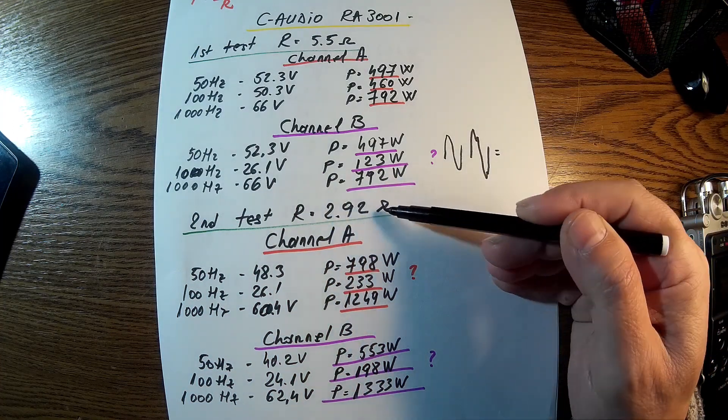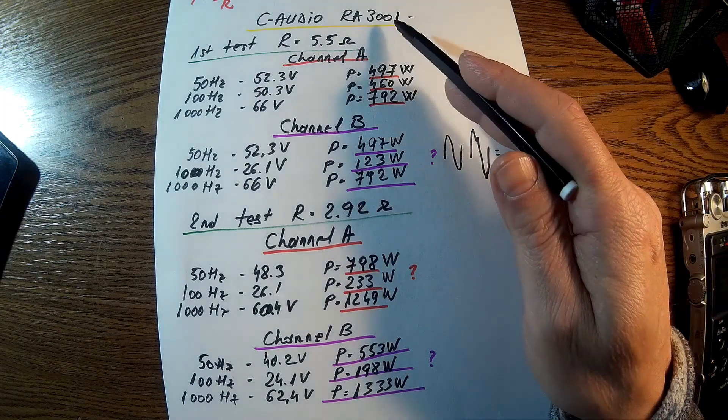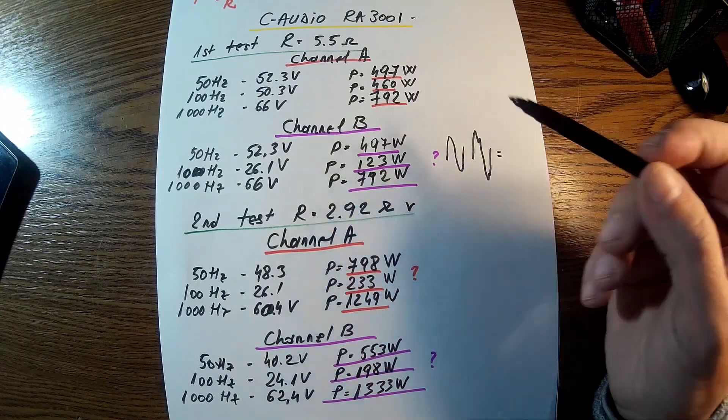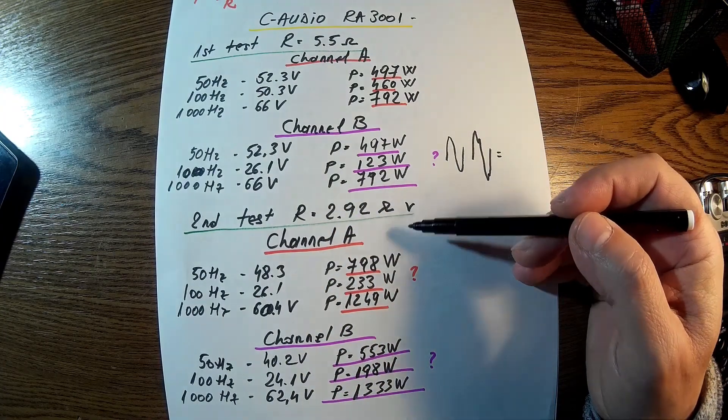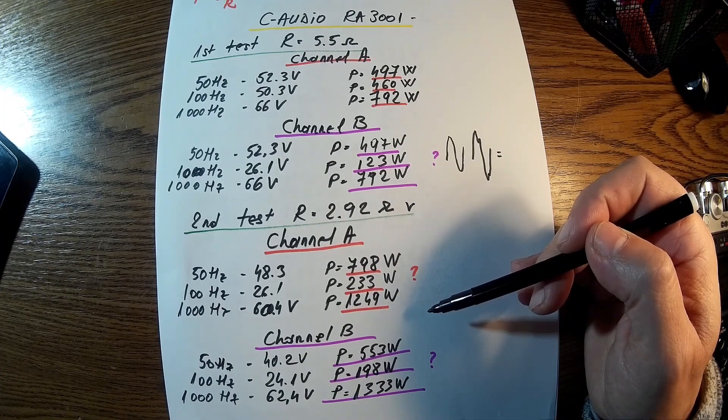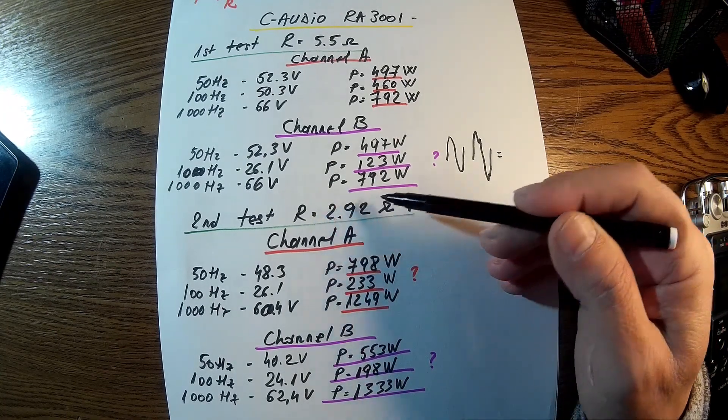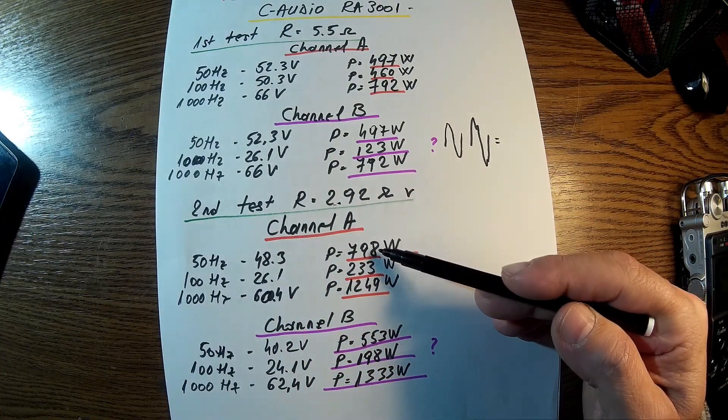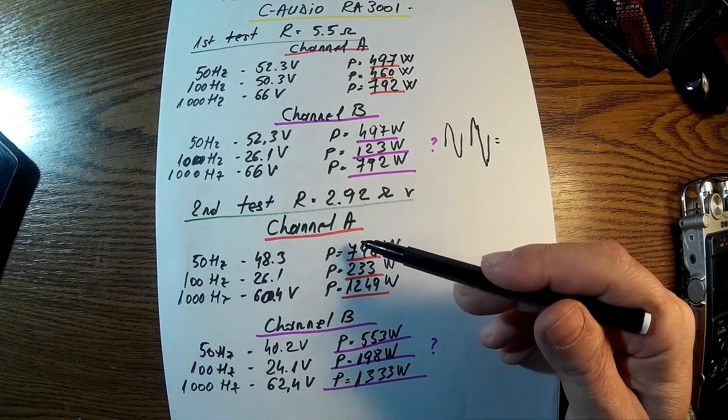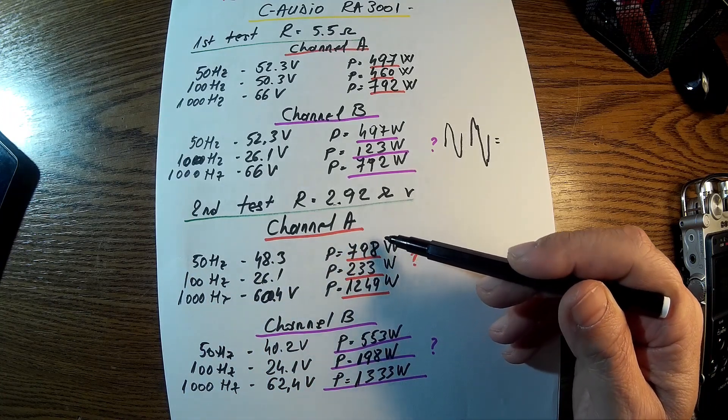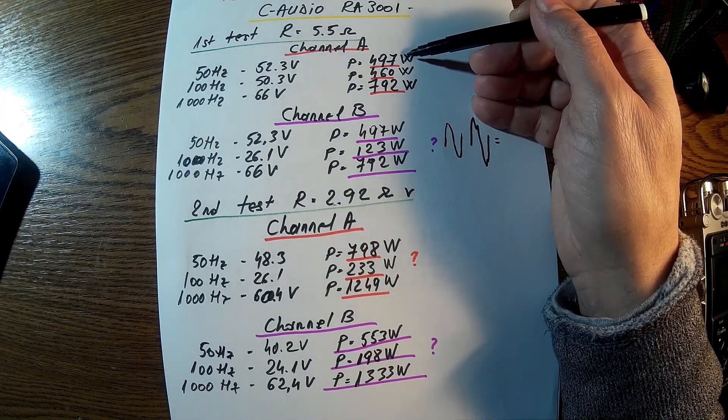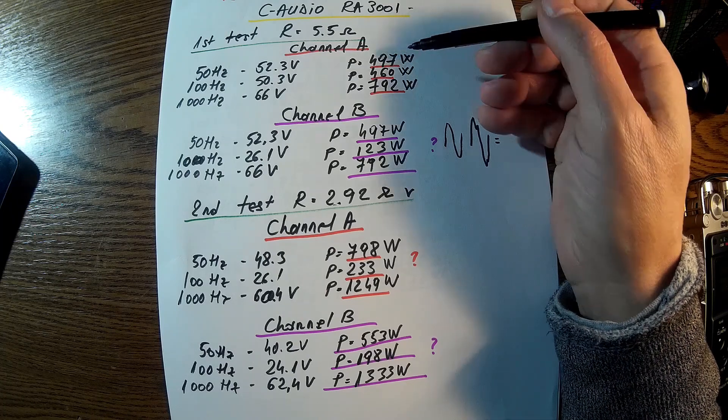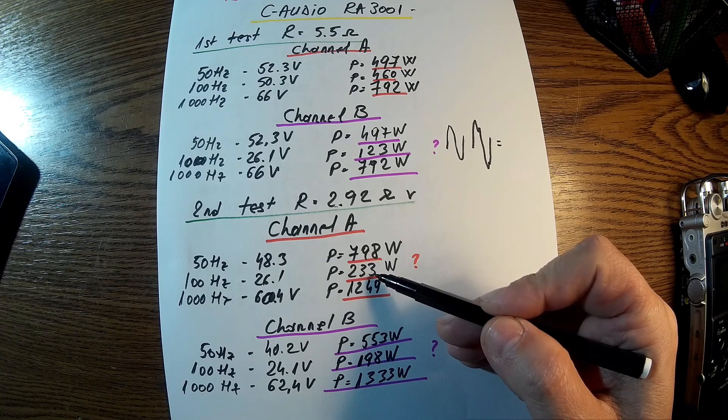And then with 2.92 ohms. You know, this kind of amplifier shouldn't go lower than 4 ohms, so somehow this is a kind of experiment. I did it to see if it's working and it's working, but it will never be on 2 ohms or something. We have 50 Hz in channel A, 798 watts. You see, it's almost 250 watts difference. This is good. 250 for 100 hertz here, same story.